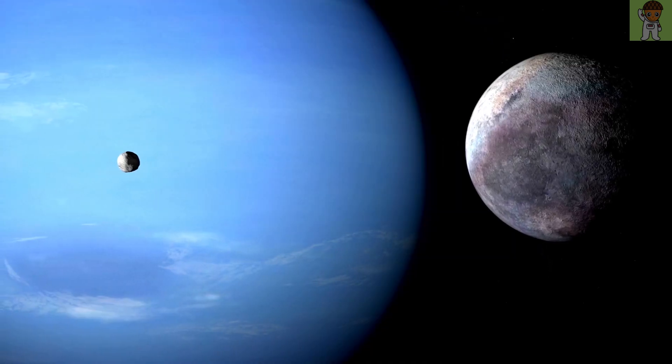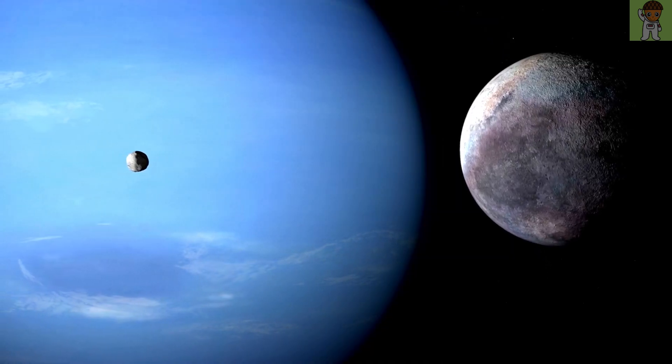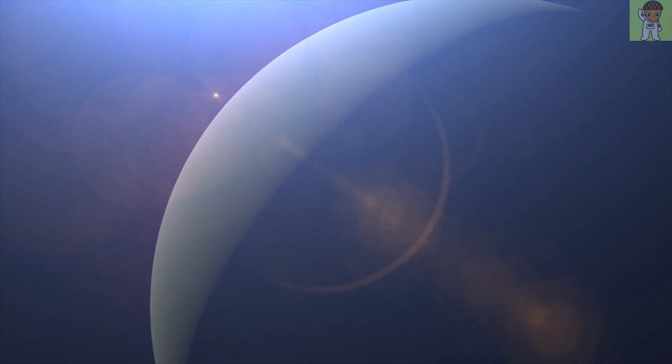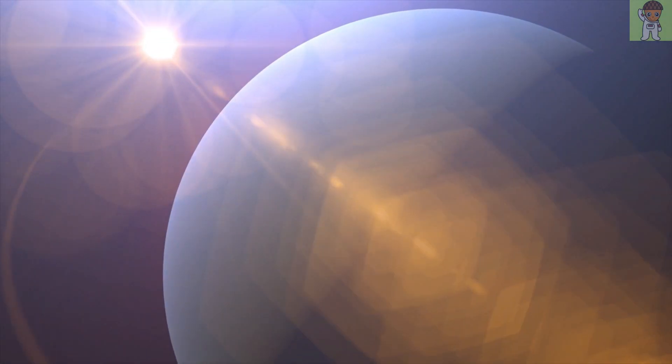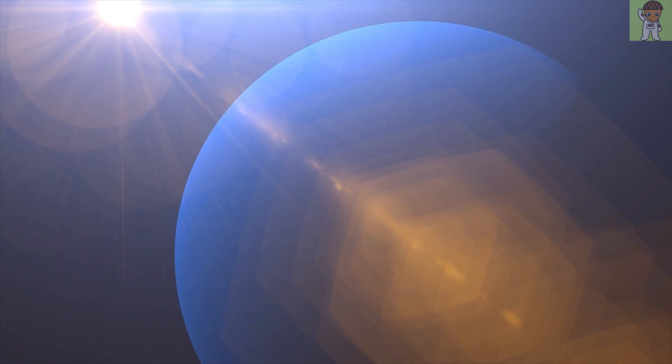This year, astronomers also noticed that all of Neptune's clouds had suddenly vanished. The disappearing act is likely linked to a peak in solar activity as the sun reaches the explosive peak in its roughly 11-year solar cycle known as the solar maximum.